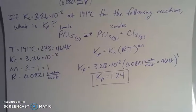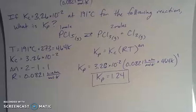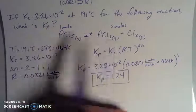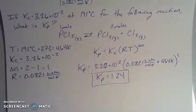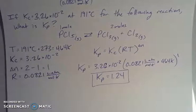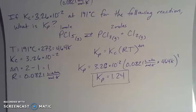Kp and Kc are not the same number, but they use the same setup for writing their expressions, and we can convert from one to another as long as we know the temperature and have a balanced chemical equation to determine delta n. That's a little bit about equilibrium and gases. If you have any questions, don't hesitate to reach out — otherwise, I'll talk to you again soon.